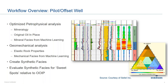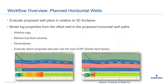Once we had all of that information, the question was how to evaluate our horizontal well paths. We had 3D surfaces provided by the geologist so we could look at the well path relative to those surfaces. We then took logs — wireline logs, mineral and fluid volumes, and electrofacies logs — and forward modeled those along our well path, evaluating which of the two well paths got us into our sweet spot facies and stayed in it longer to maximize productivity.